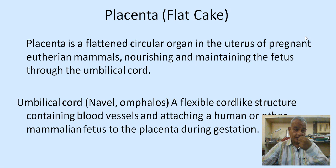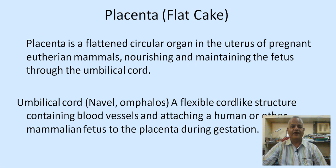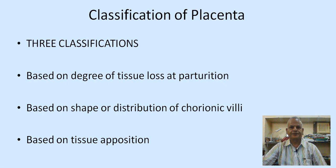The word placenta is derived from a Latin origin because it resembles a flat cake — the Latin for flat cake gives us the word placenta. Placenta is a flattened circular organ in the uterus of pregnant eutherian mammals, nourishing and maintaining the fetus through the umbilical cord. The umbilical cord, or navel omphalos, is a flexible cord-like structure containing blood vessels and attaching a mammalian fetus to the placenta during gestation.